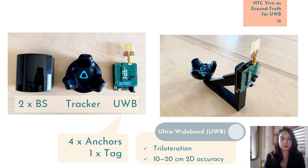So, our ground truth system contains two base stations and one tracker, and the ultra-wideband localization system uses four anchors and one tag.